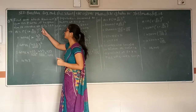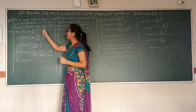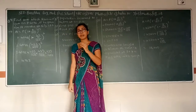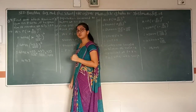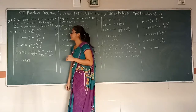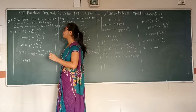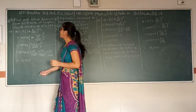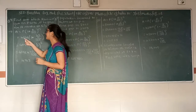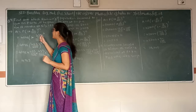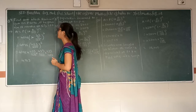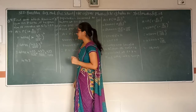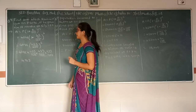Now we will convert 12.5% — that is 25 upon 2 — into the compound interest formula. A is equal to P into bracket 1 plus R upon 100 raise to N. So P is equal to 4,096 into bracket 1 plus 25 upon 2 upon 100, which simplifies as 1 plus 25 upon 200, raise to 3.